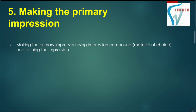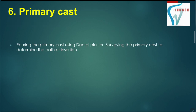Now, we will be making the primary impression using impression compound. After making the impression, we have to pour the cast — we have to make a primary cast. For pouring the primary cast, we will be using dental plaster. We will survey the primary cast to determine the path of insertion of the denture.